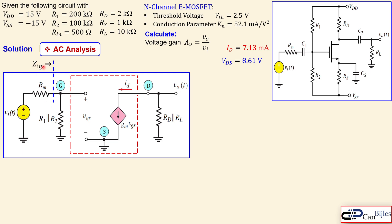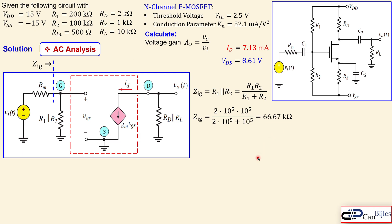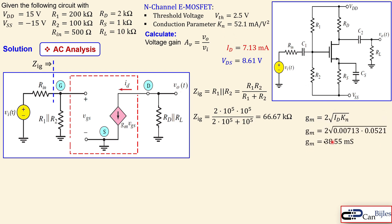The impedance looking into the gate, ZIG, is simply R1 ∥ R2. With R1 = 200 kΩ and R2 = 100 kΩ, ZIG = 66.67 kΩ. The transconductance GM = 2√(KN·ID), using the DC drain current and MOSFET parameter KN. Substituting the values gives GM = 38.55 mS.